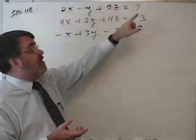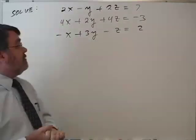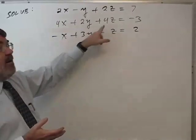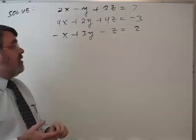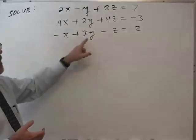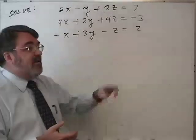So I'll read it off quickly. 2x minus y plus 2z equals 7. 4x plus 2y plus 4z equals negative 3. Negative x plus 3y minus z equals 2.